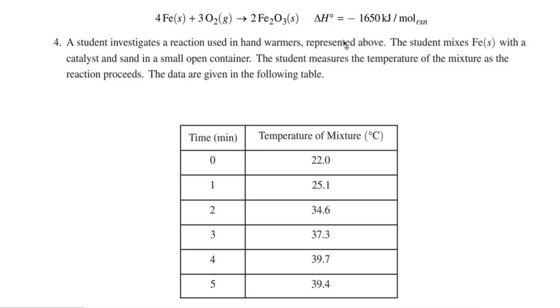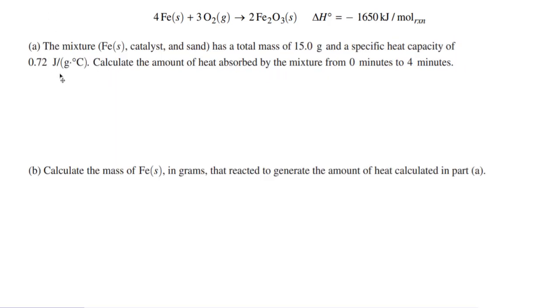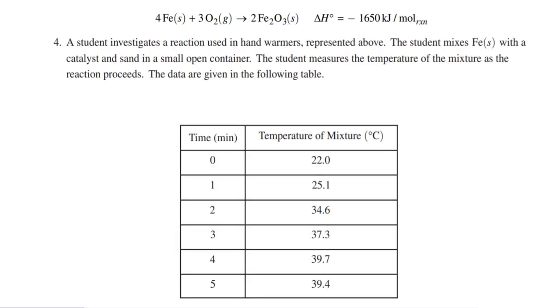You can see the delta H, the enthalpy, is negative 1650 kilojoules per mole of the reaction, and the student mixes iron with a catalyst and gets this temperature change. The first question asks: the mixture of iron, catalyst, and sand has a total mass of 15.0 grams and a specific heat capacity of 0.72 joules per gram degree Celsius. We want to know the amount of heat absorbed by the mixture from zero minutes to four minutes.